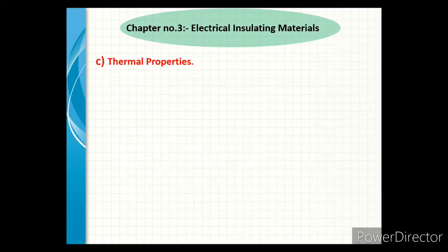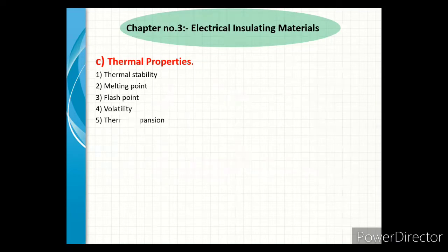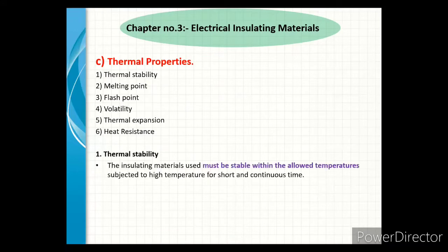Next is the thermal property of insulating material, which includes thermal stability, melting point, flash point, volatility, thermal expansion, and heat resistance. Thermal stability: insulating material used must be stable within the allowed temperature, subjected to high temperature for both short and continuous time.